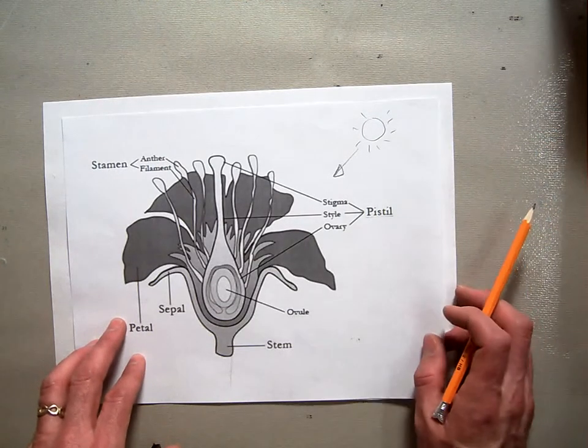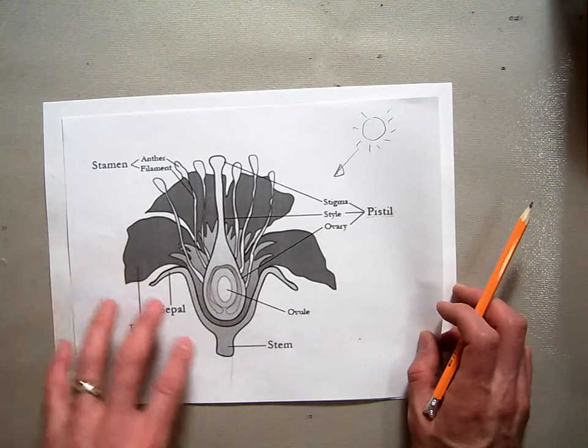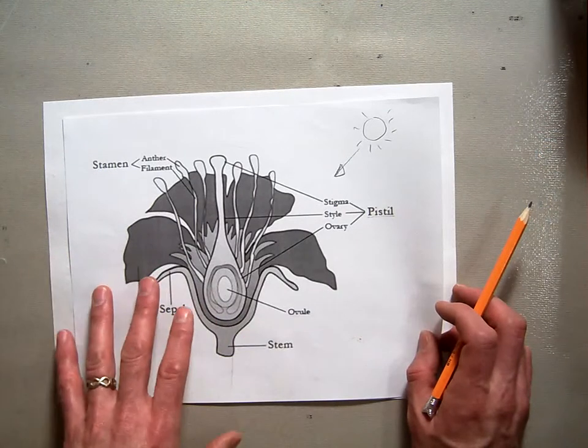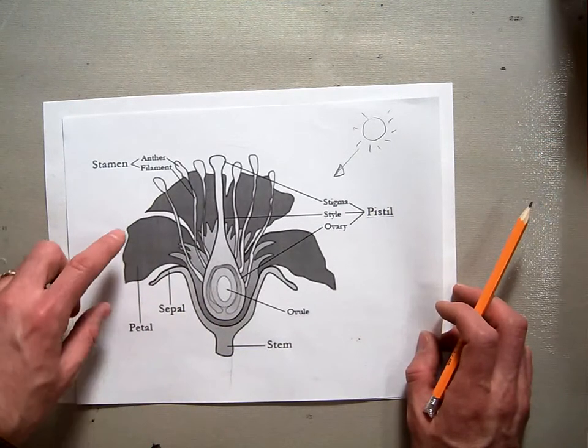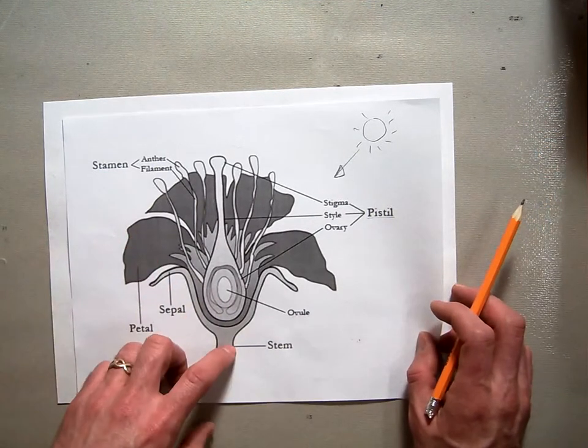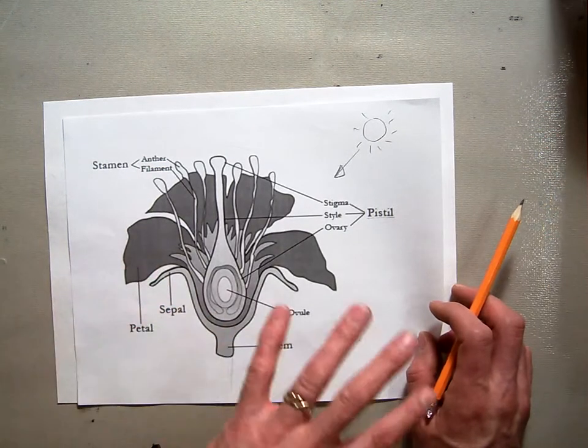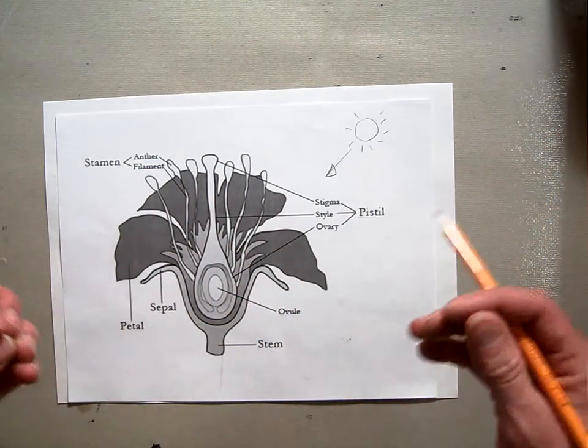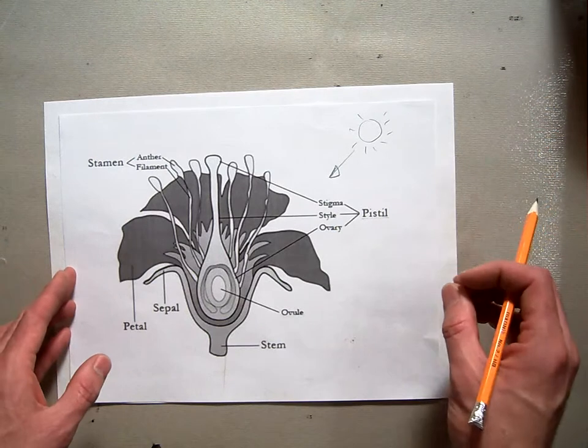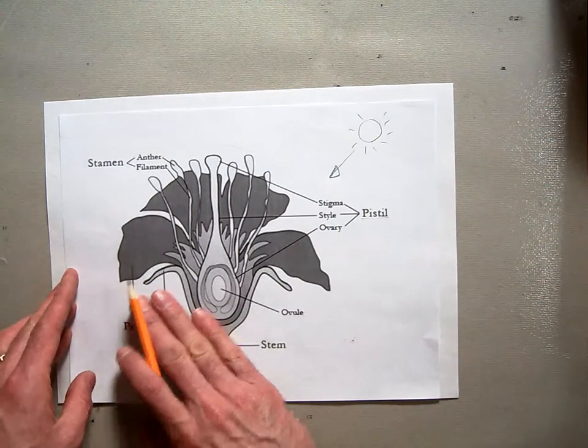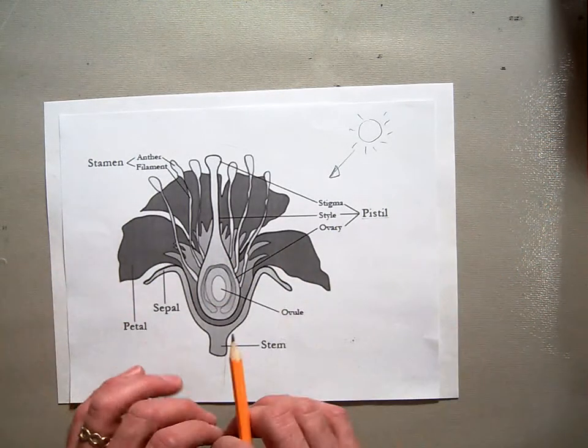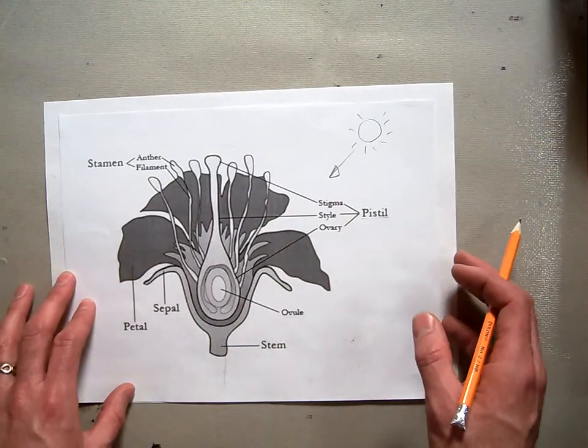And the flowers that we're going to learn how to draw today all follow this same layout. However, each one of them has different looking petals, different looking stem, different looking sepal, so that they have a different unique feel to the specific flower. But all of the same botany and plant parts are the same.